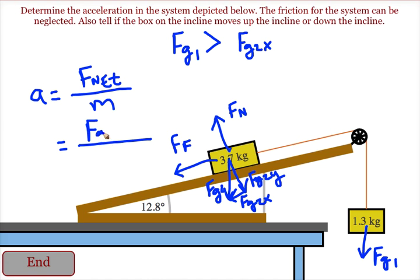The net force would be, if the system is moving with this block going down, then we do that force gravity minus the force gravity on block 2 in the x direction minus friction. The one force that's trying to make the block go up the incline, minus the two that are pointing down the incline, divided by the total mass of the system.